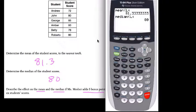Describe the effect on the mean if Ms. Mosher adds five bonus points to each of these six scores. So let's just go back and we're going to do this manually, then we'll talk about the algebra behind it.